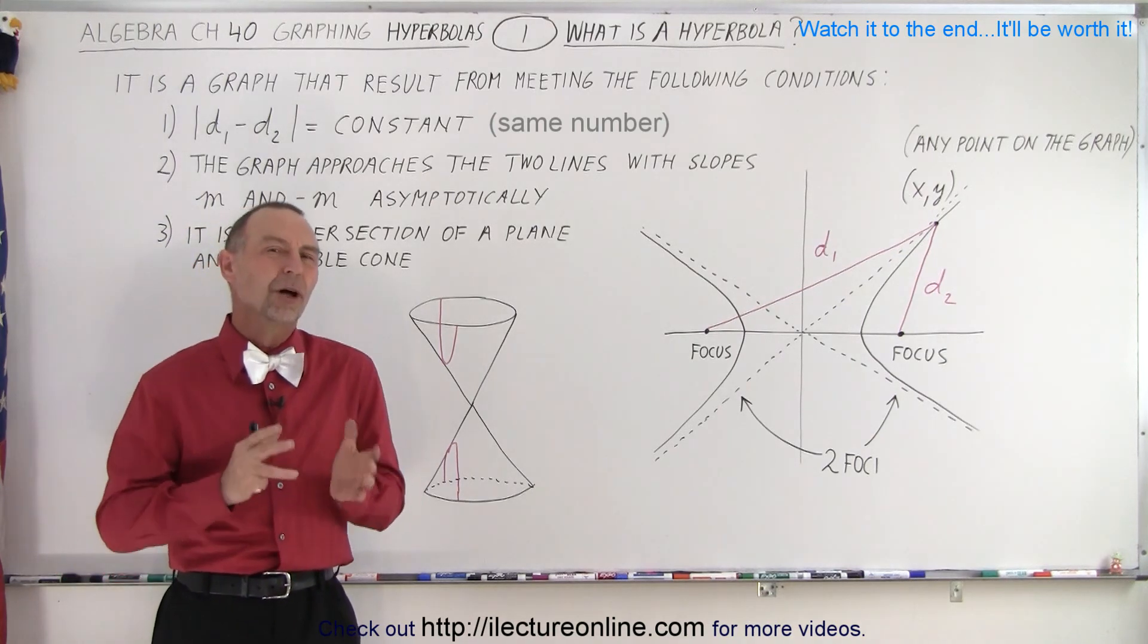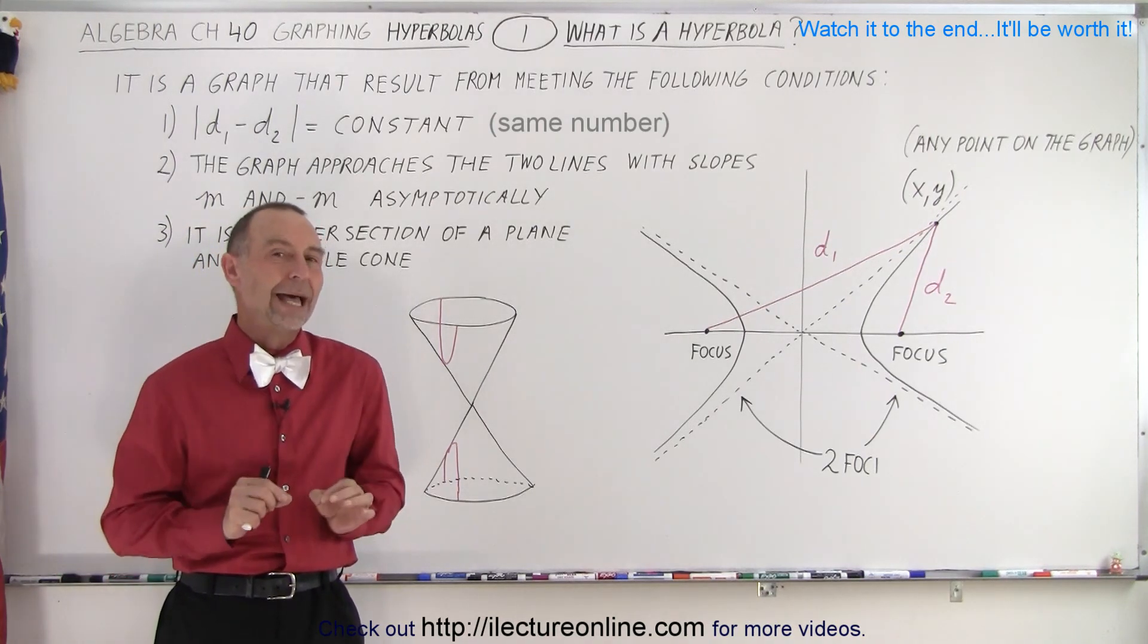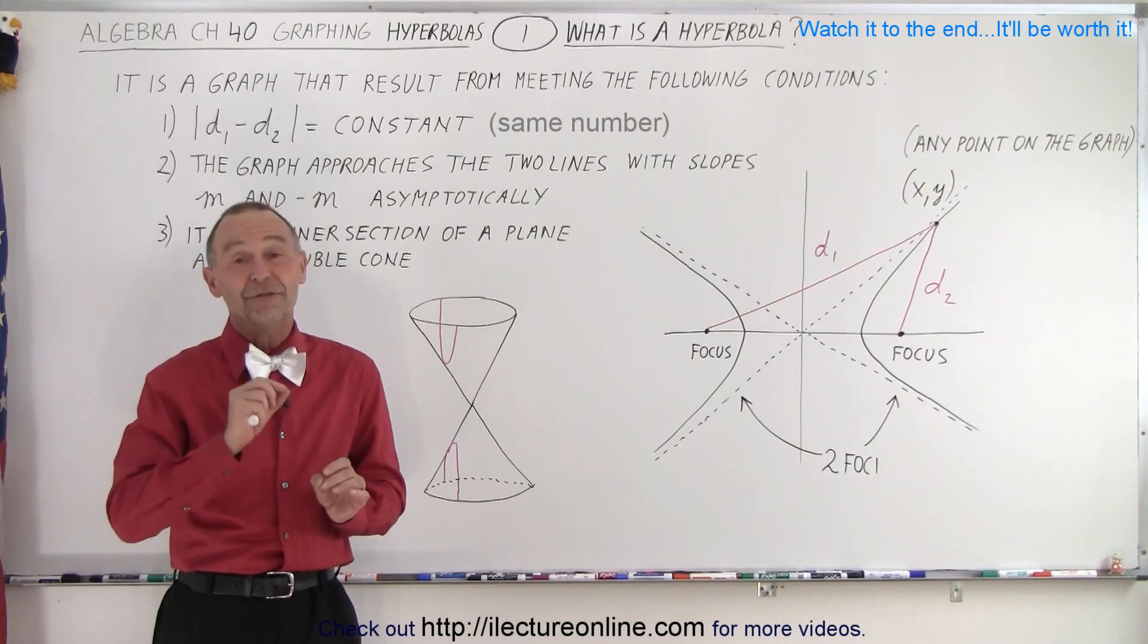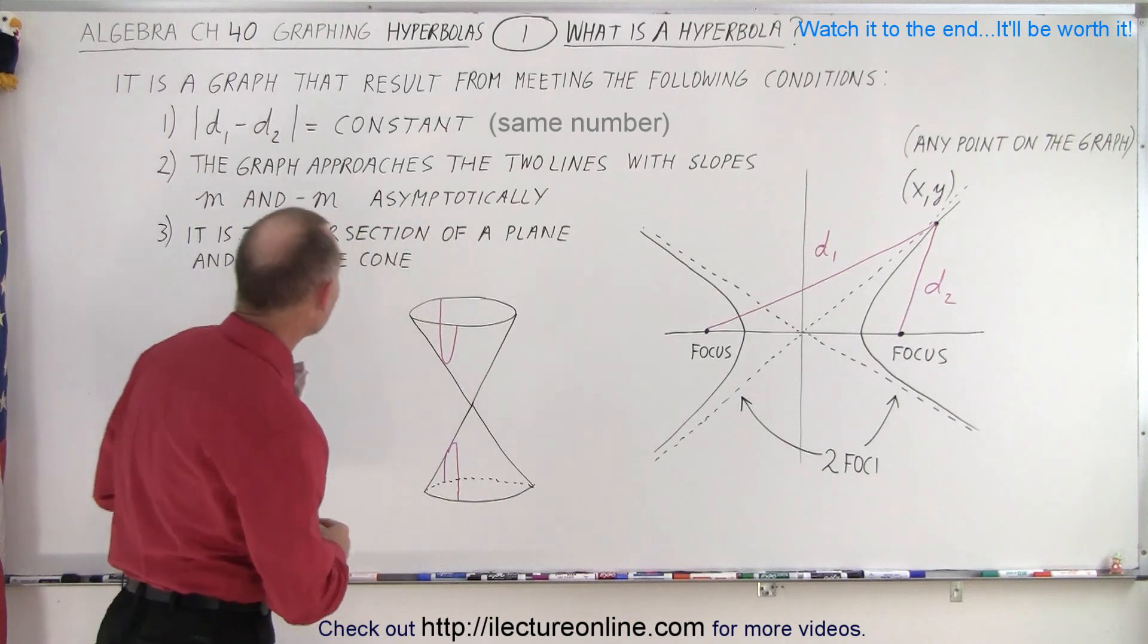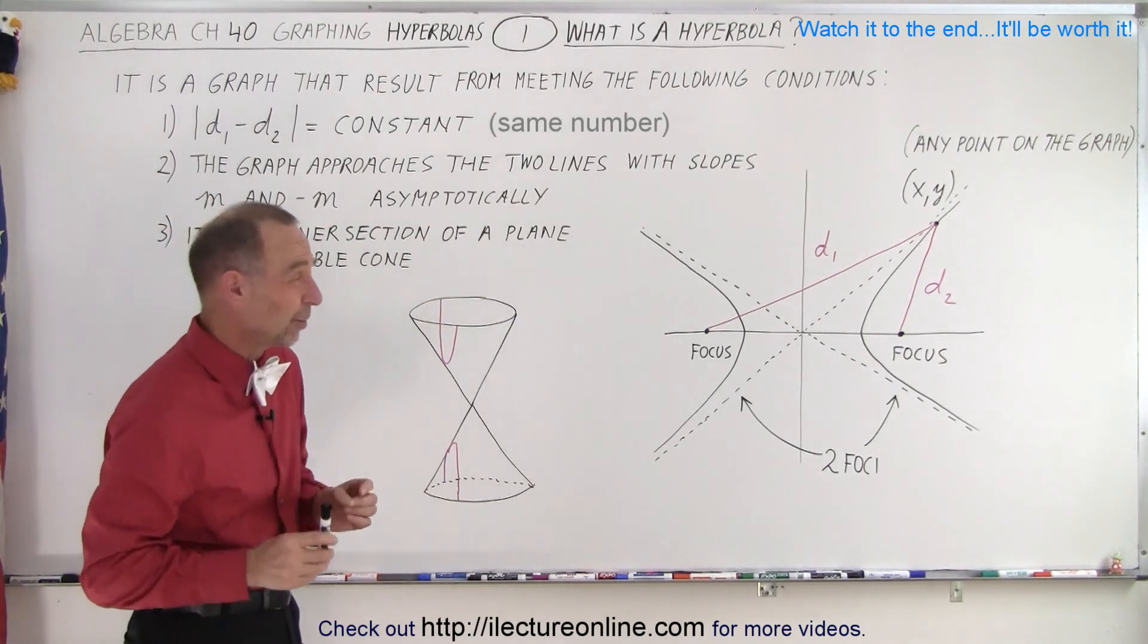And yes it is a graph of an equation that looks kind of interesting. It almost looks like a double parabola but it's not quite that. It's a graph of a function that must meet the following conditions. So what are the conditions it must meet?